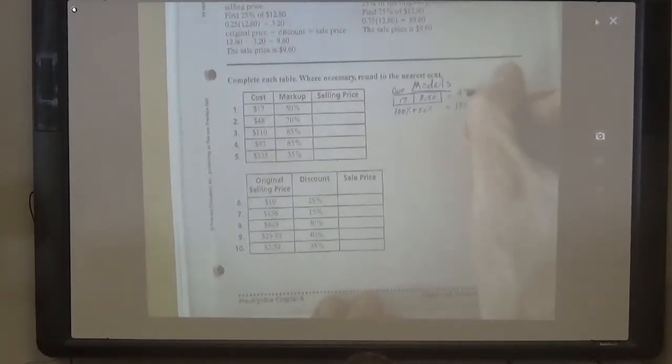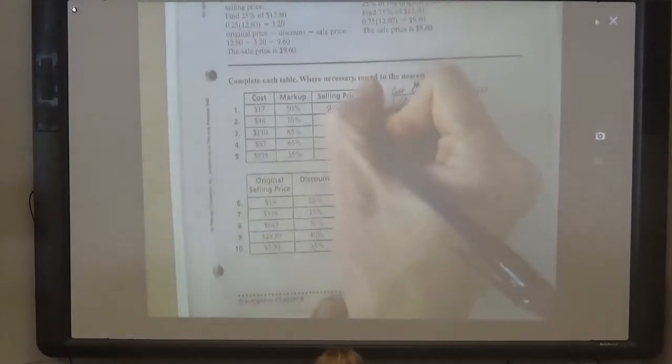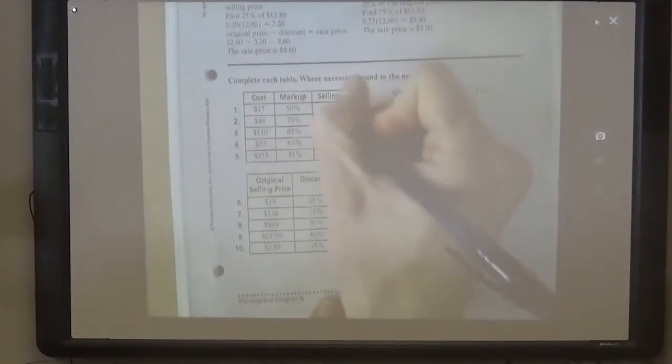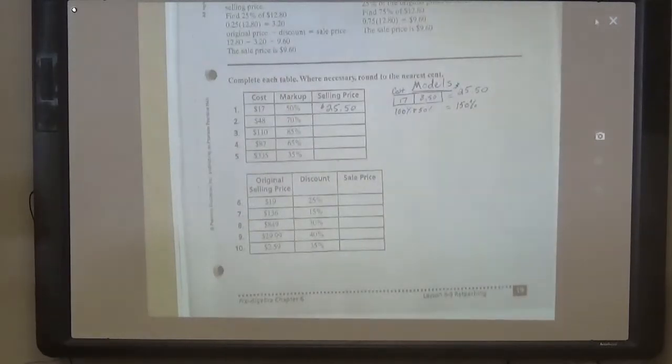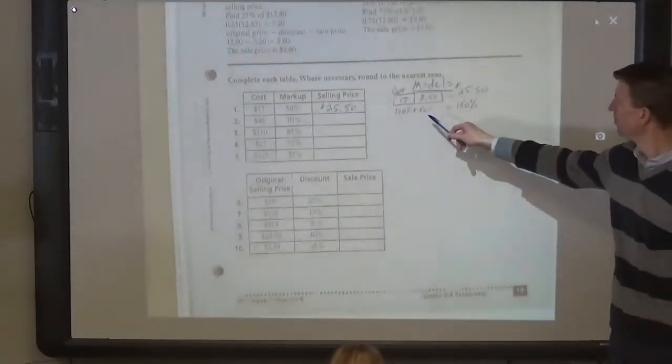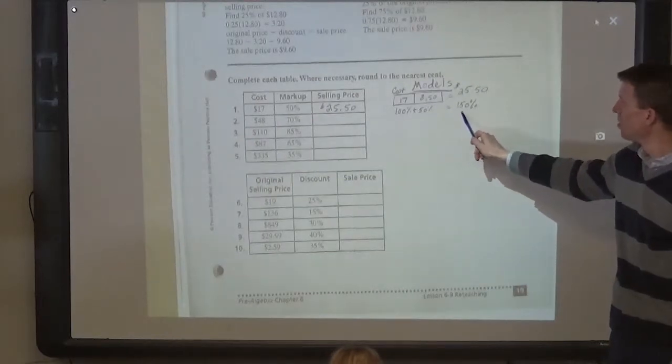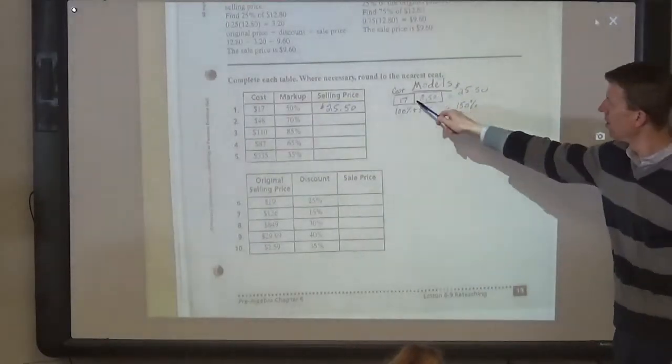So what is the selling price then? $25.50. And so you can write that into the selling price. So the cost plus the markup amount is equal to the selling price. Is everybody following this? Yeah, you can see it with the model. The cost plus the markup amount is 150% of the cost.